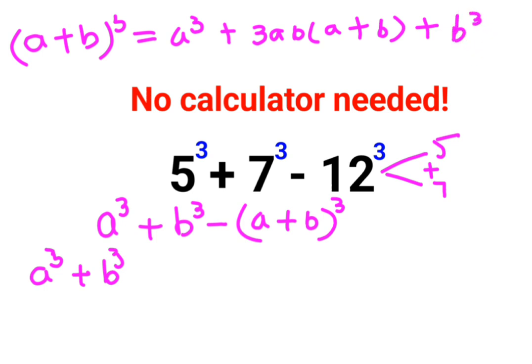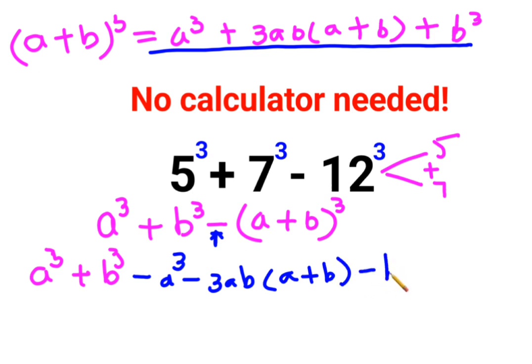Now since there is a negative sign in front, we will just multiply a negative sign with this entire value. So we'll get a³ minus 3ab(a plus b) minus b³. So now what happened? This got cancelled.